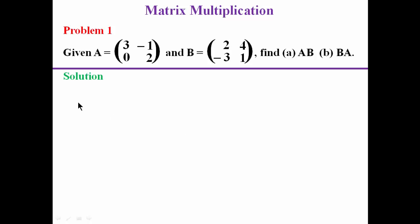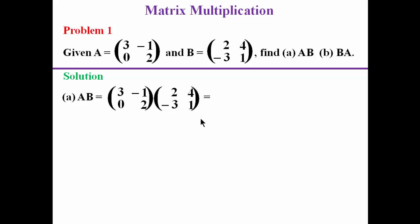To find the product of A and B, in our solution we bring matrix A followed by matrix B. For matrix multiplication, we pick the first row and pick the first column.